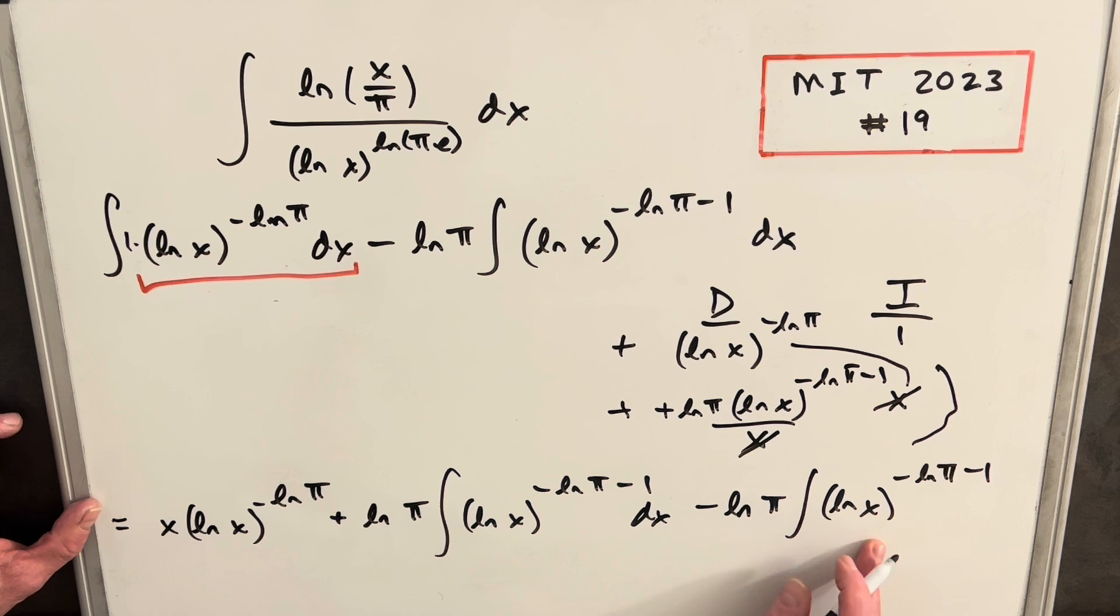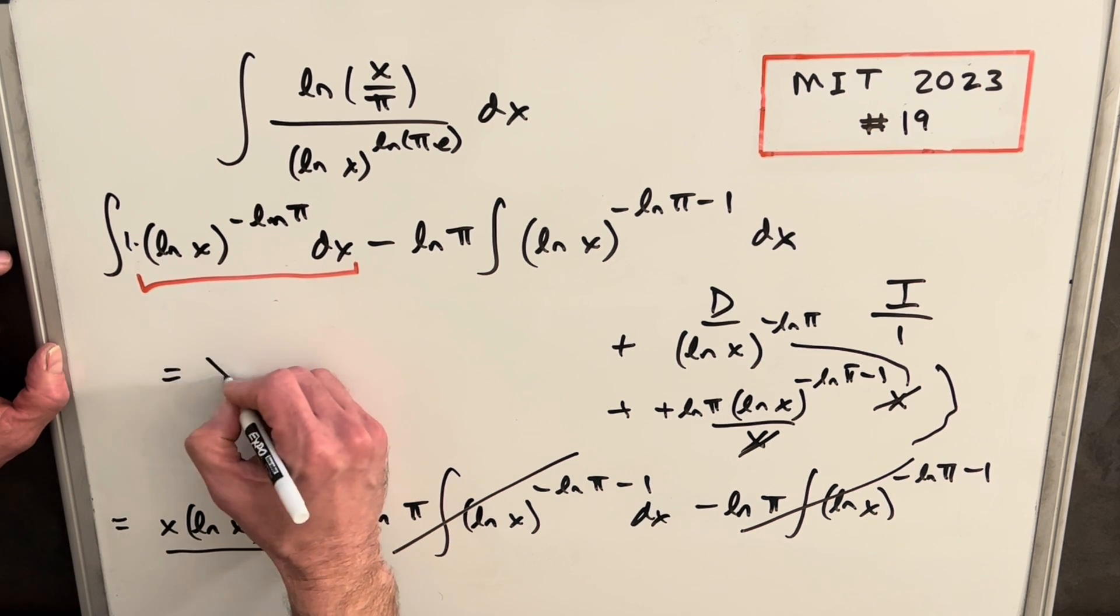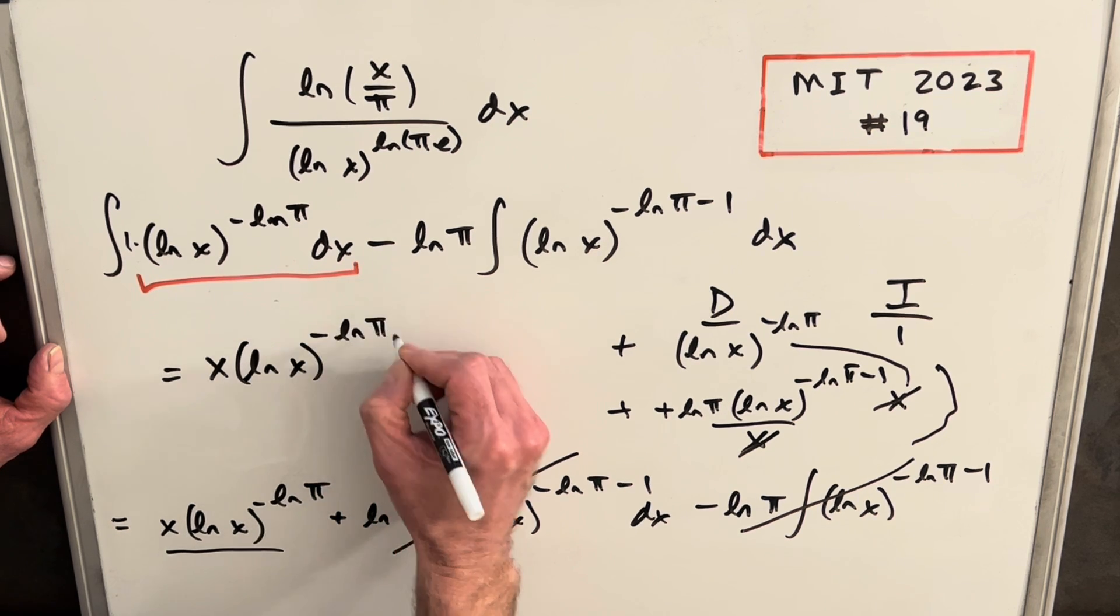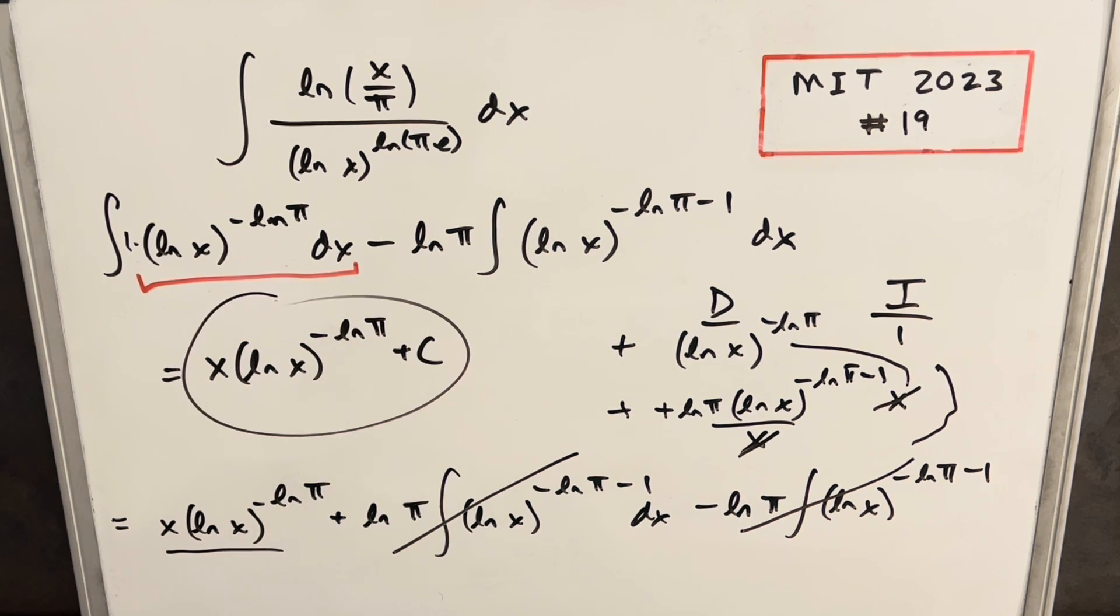Well, these are the same integrals. We have the same thing in front. We're subtracting it. So this is actually just going to cancel with this. And so our whole answer is right here. So just to write out our final answer, we're going to have x(ln x)^(-ln π) plus c. And that's it. I thought it was a good problem.